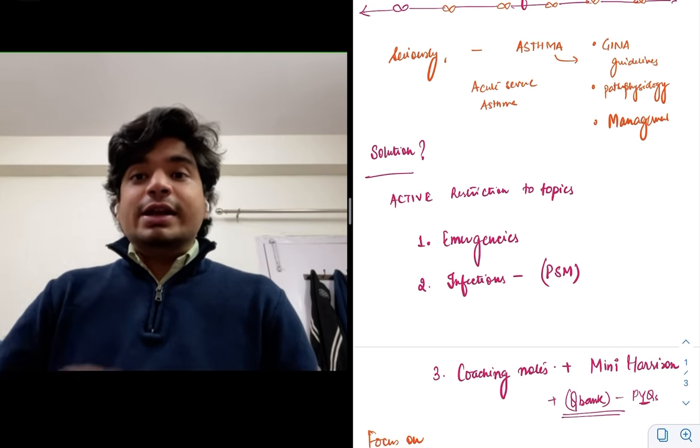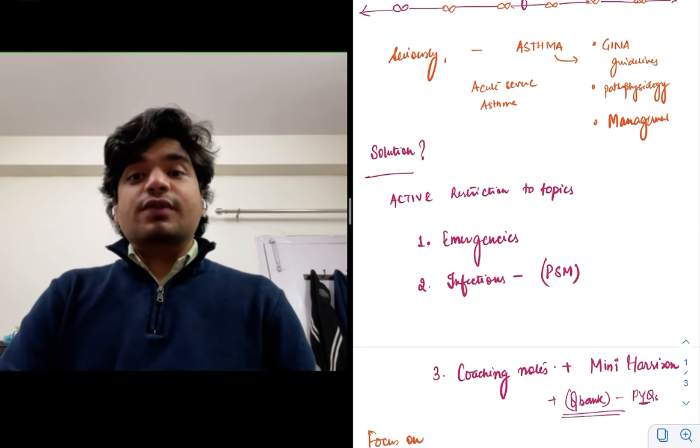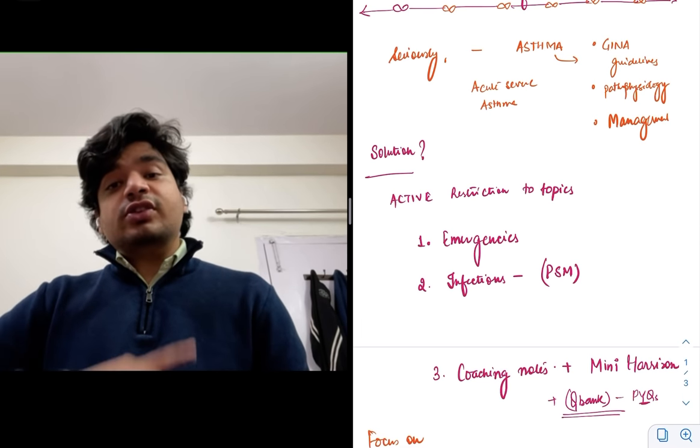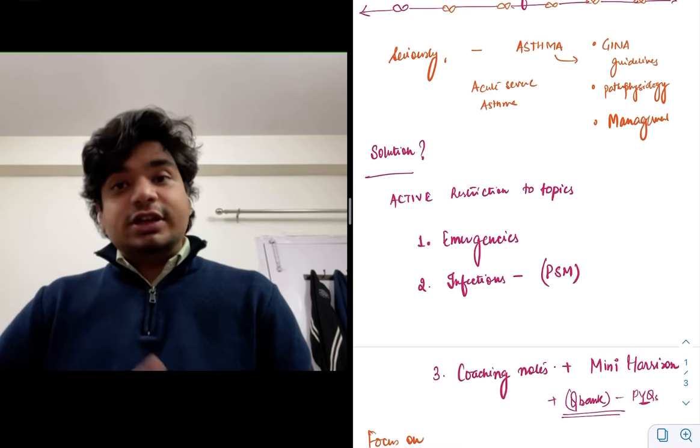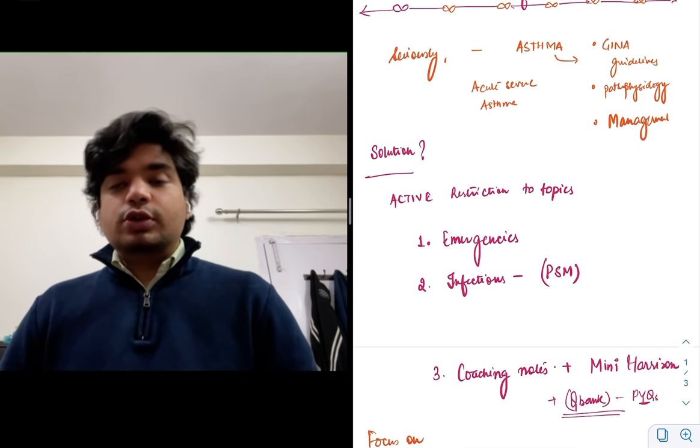Because PARC is written in an Indian context rather than Harrison, which is written in a foreign context. So read your infections, that infectious disease chapter in PARC thoroughly. That actually needs to be read thoroughly. Make notes from it and you will be set.